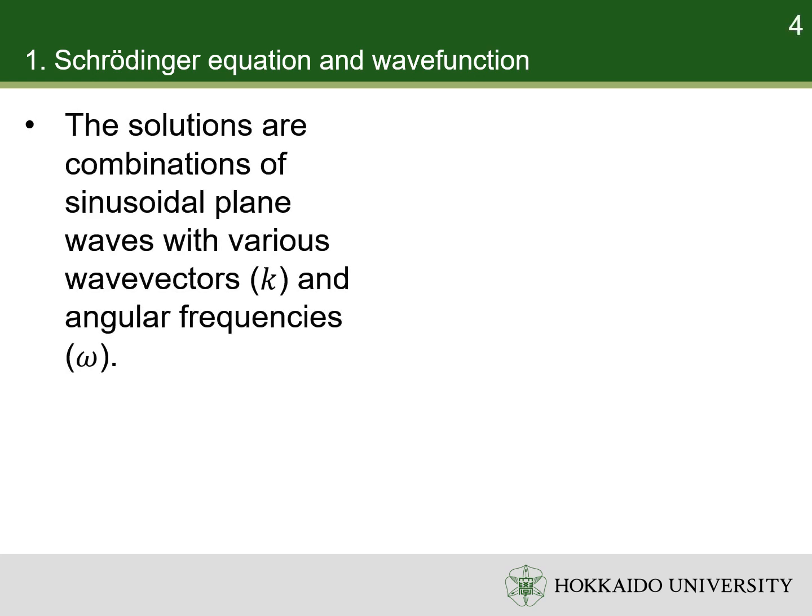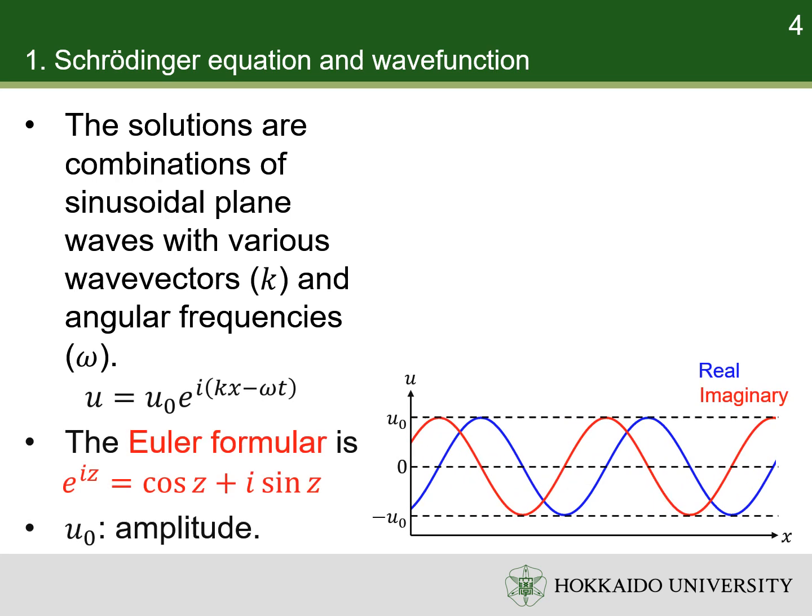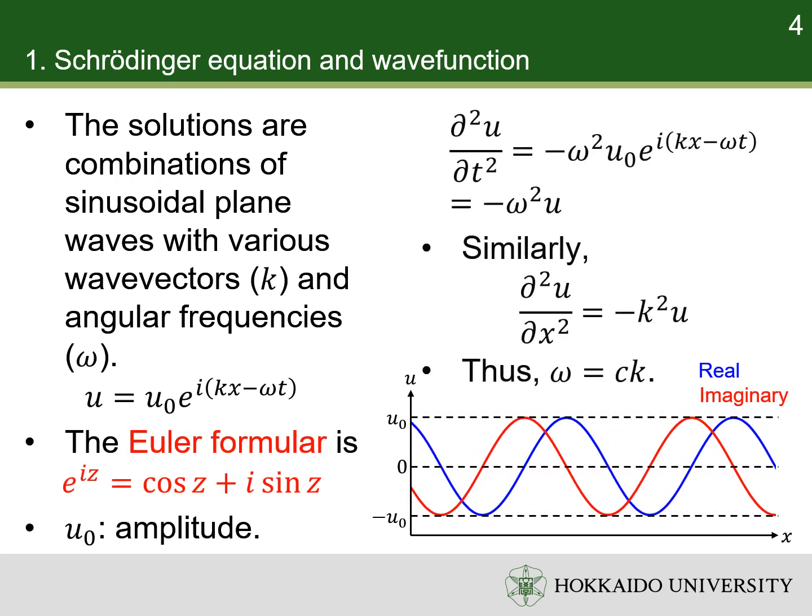A solution of this wave equation can be quite complicated, but it can be a linear combination of sinusoidal plane waves with various wave vectors and angular frequencies. The sinusoidal functions are conveniently expressed with Euler formula. All the plane waves have the same propagation speed, so that the angular frequency and wave vector are related to each other through the wave speed.